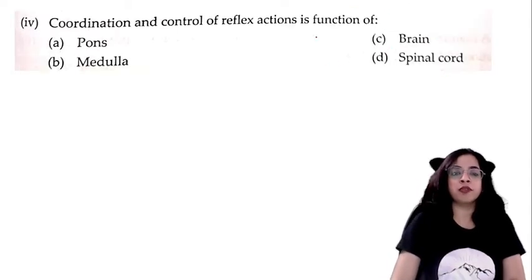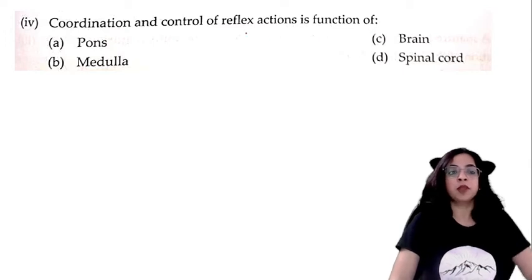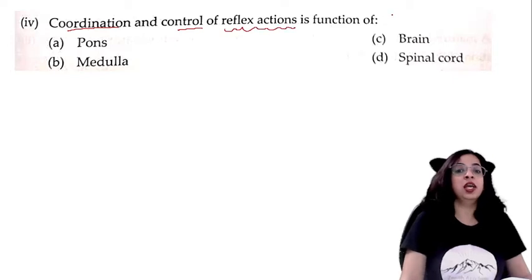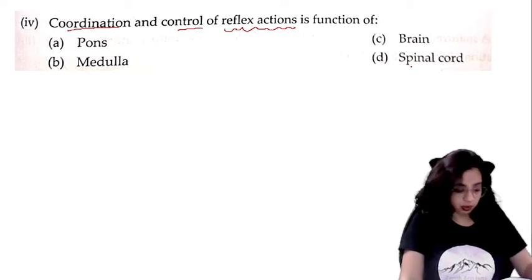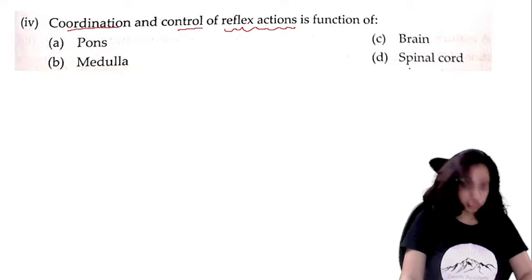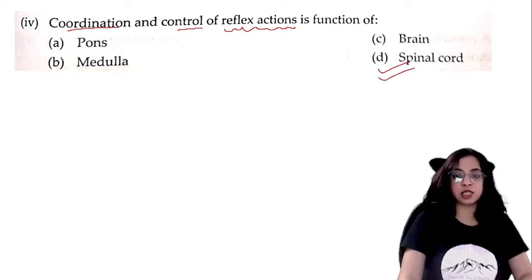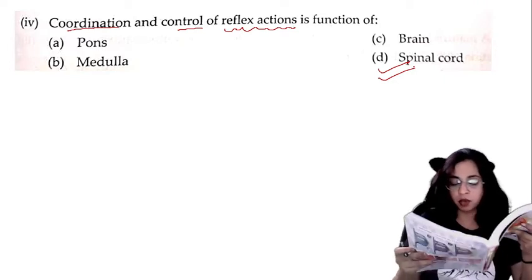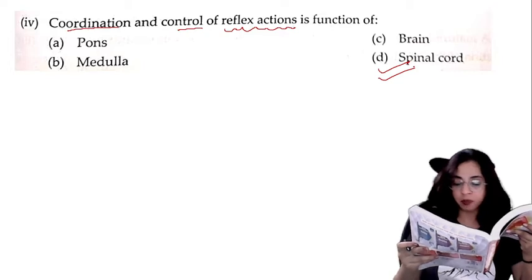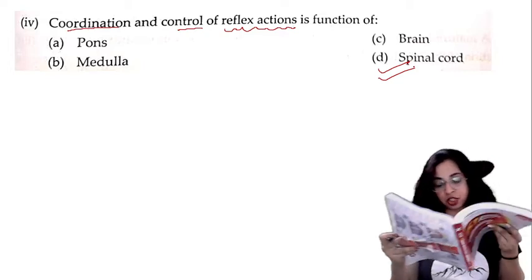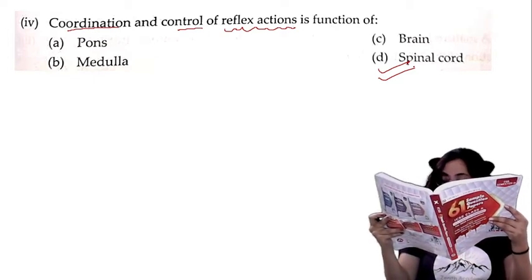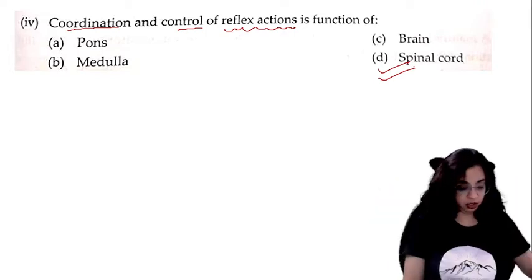Coordination and control of reflex action is a function of: spinal nerves, medulla, brain, or spinal cord? The answer is D — spinal cord. The explanation: the posterior region of the medulla oblongata forms the spinal cord. The main function of the spinal cord is coordination and control of reflex action — it works as the center of reflex actions and carries waves coming out of the brain.